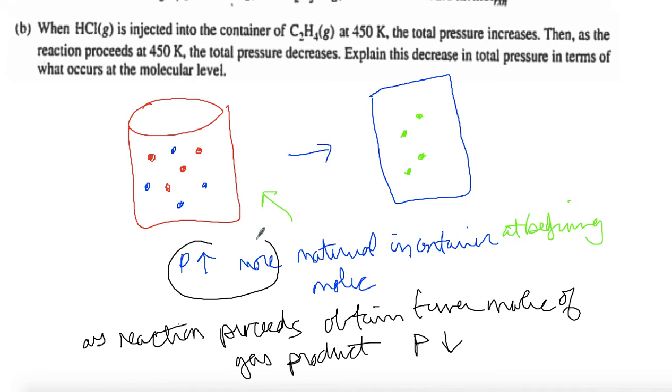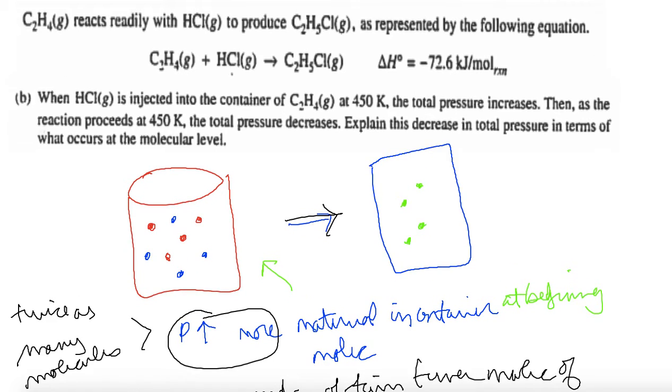First, because you added a second amount of material, pressure went up because twice as many molecules were hitting the container more times. At the beginning you have twice as many molecules, P goes up. And then as the reaction proceeds, you have fewer molecules because the reaction has two molecules on the reactant side and only one molecule on the product side.